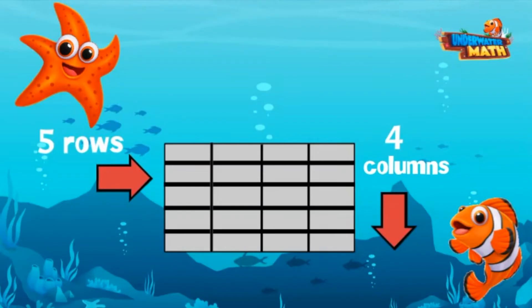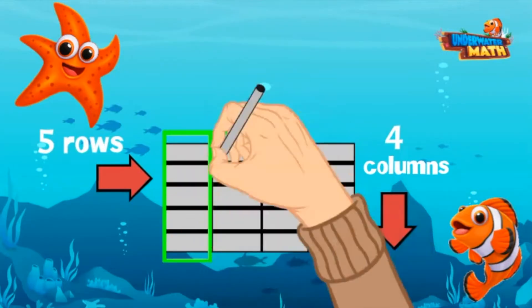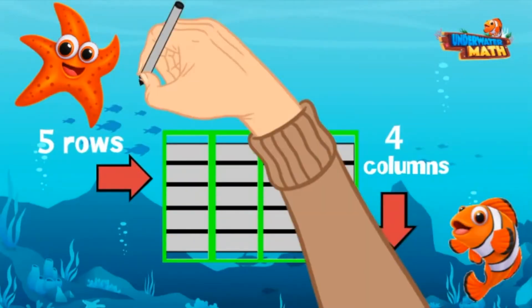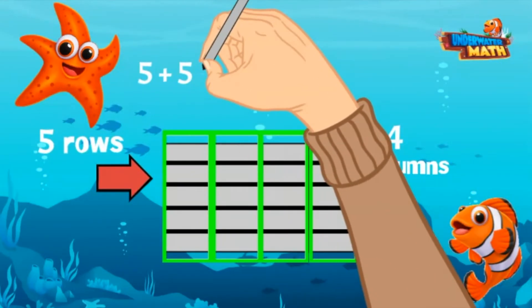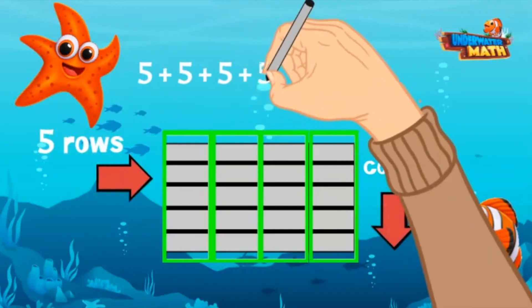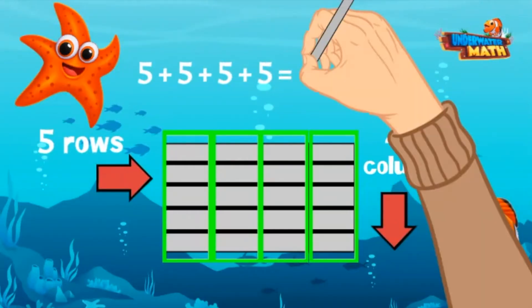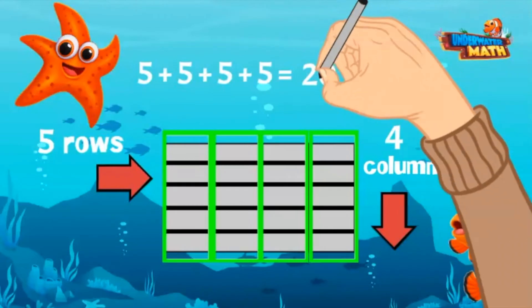To find out how many total boxes are in this array, we can add. Let's add by the columns first, which would be 4 fives: 5 plus 5 plus 5 plus 5. Since we know 5 plus 5 equals 10, we can add 10 plus 10, which equals 20.